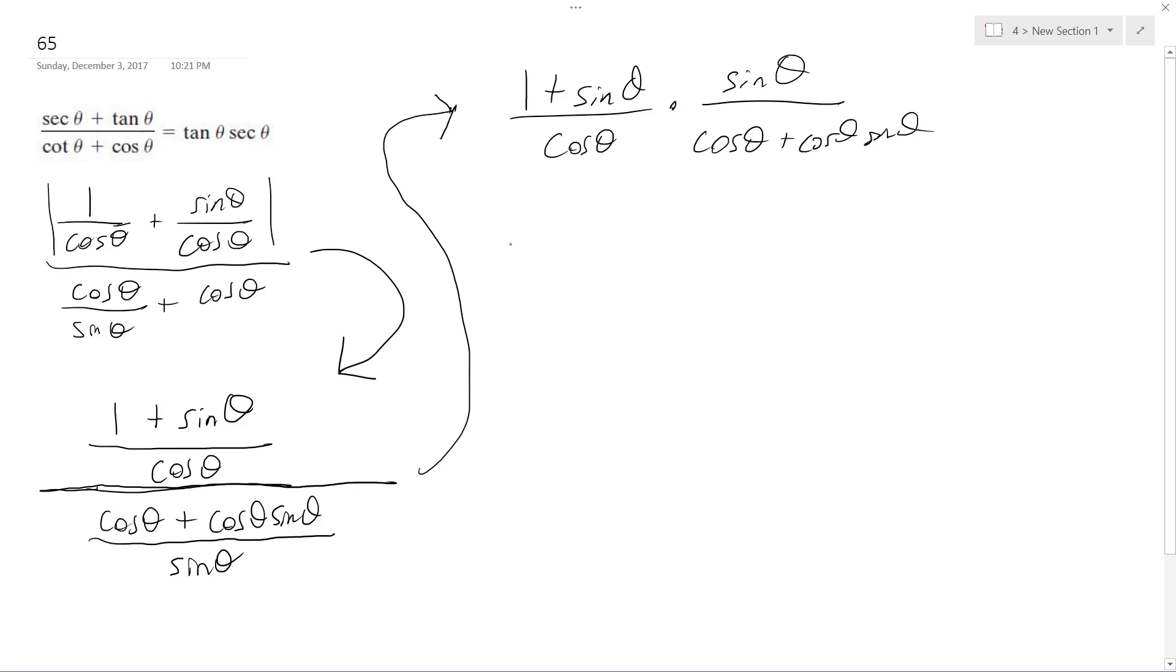All right, so it doesn't look like we can do too much now, but there's a quick trick here. So this portion right here, what we can do is we can pull out a cosine theta and we get 1 plus sine theta. Oh, hey, that looks kind of convenient.